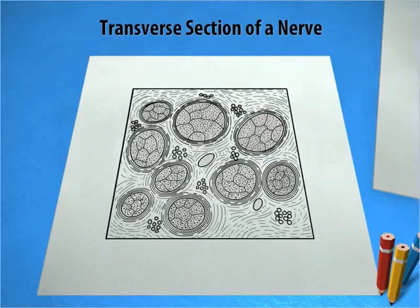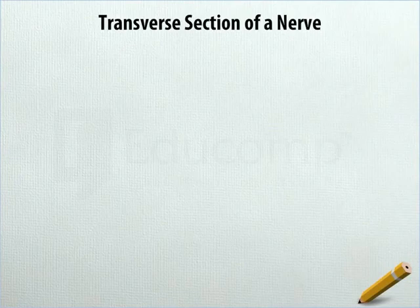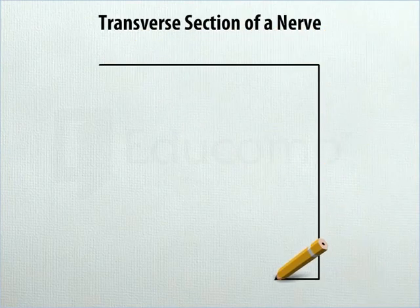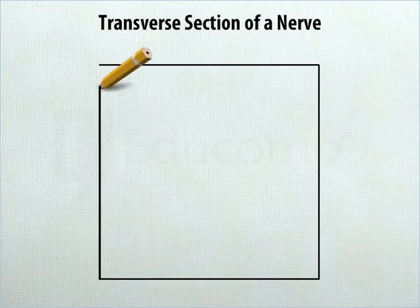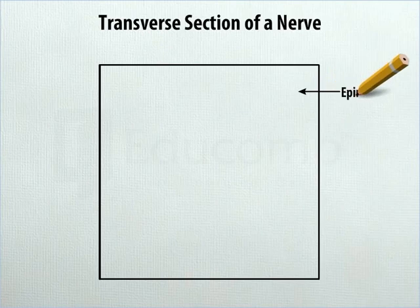Transverse section of a nerve. Learn to draw the diagram showing the transverse section of a nerve. At the center of the sheet, draw a square. Label the space inside the square as epineurium.